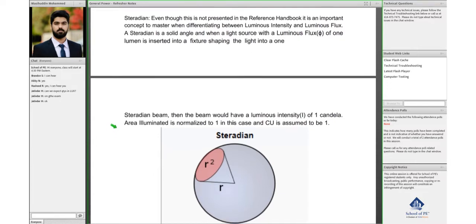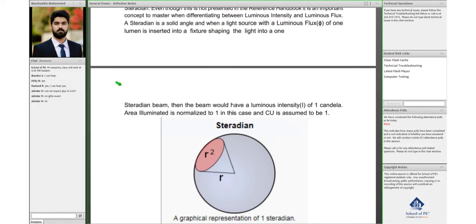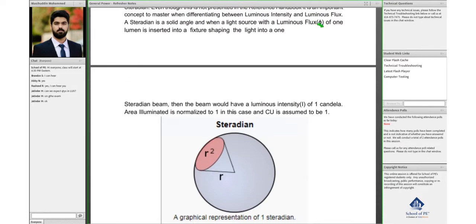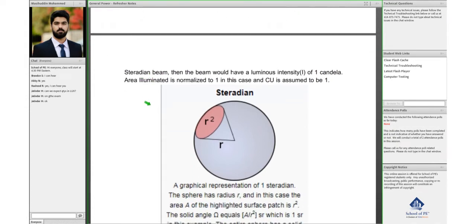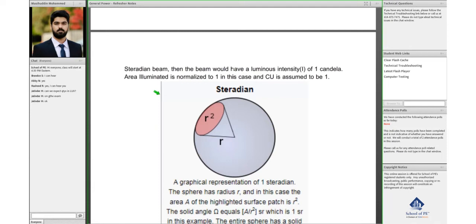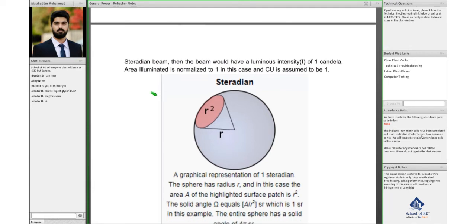Basically, steradian is a solid angle when a light source with the luminous flux phi is inserted into a fixture shaping the light into one steradian beam.